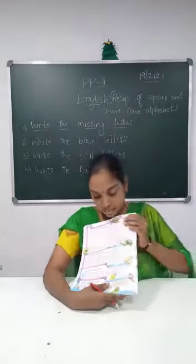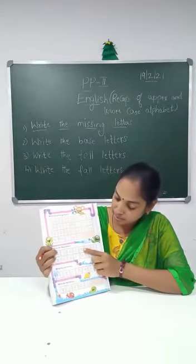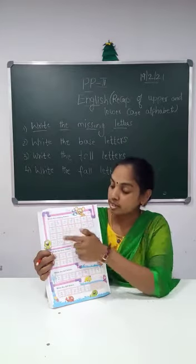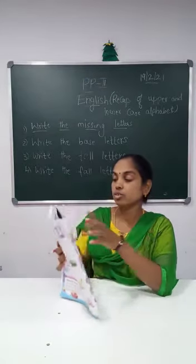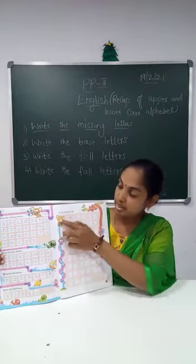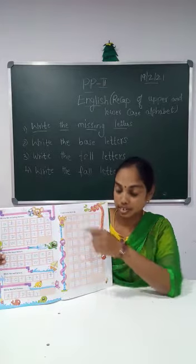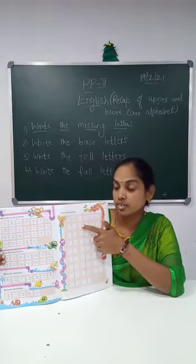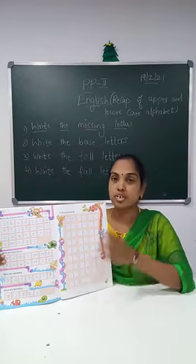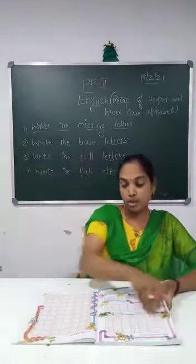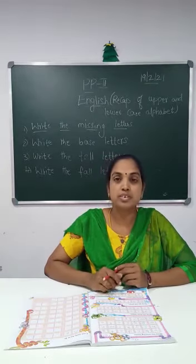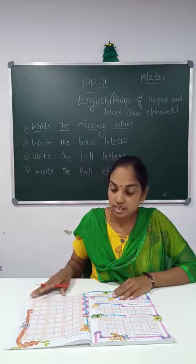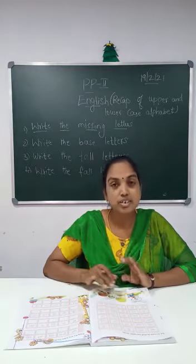So now we have finished writing the missing letters, the base letters, the tall letters, and the falling letters — three types of letters. For homework, the next page: you will write from letter A to letter Z, both uppercase and lowercase alphabets together. The page number will be sent on WhatsApp. Now we have finished learning upper case and lower case alphabets. Parents, give them good practice writing both in the four-line book. In the next class we will go on to two-letter words. Thank you.